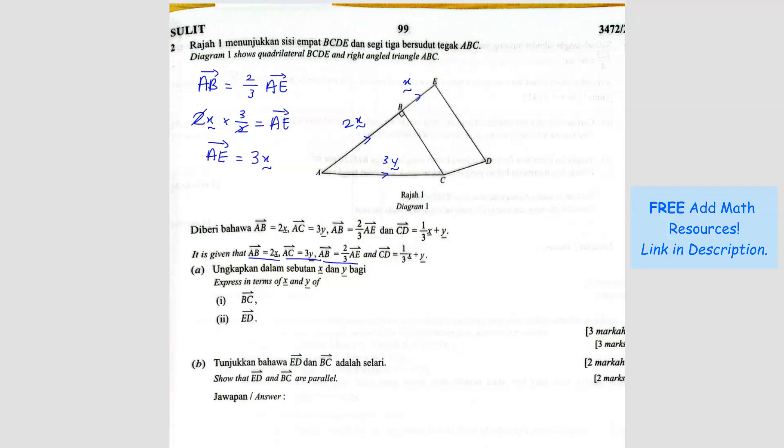Alright, what else? CD is 1 over 3. CD is here, 1 over 3X plus Y. So we got everything covered.